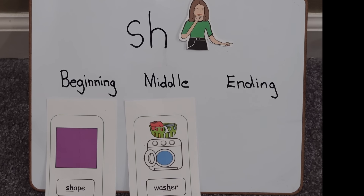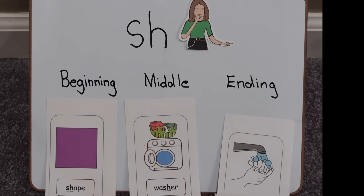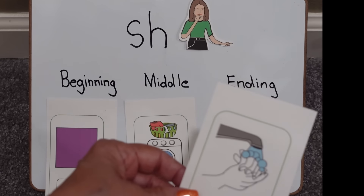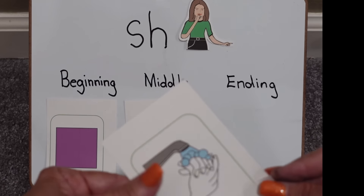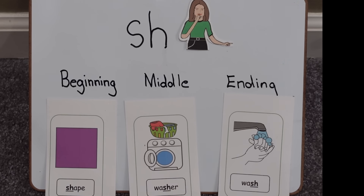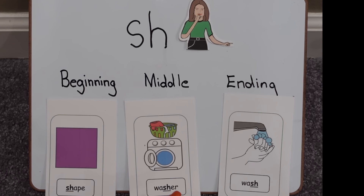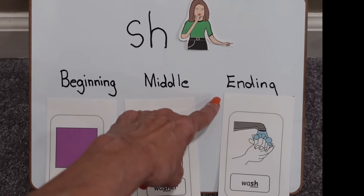And then our last word picture is this. What do you think that is? If they say water, that does not have the SH sound — remember, that's what we're listening for. What are they doing with their hands and the water? Wash. Yes. Where do you hear the SH? At the ending. And let's make sure — take the tape off. Does the word wash have SH at the end? Yes. So let's say them together: shape, and it has the SH at the beginning; washer, with SH in the middle; and wash, which has the SH at the ending.